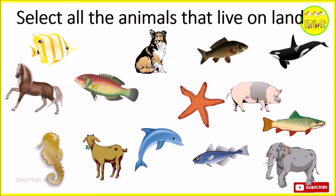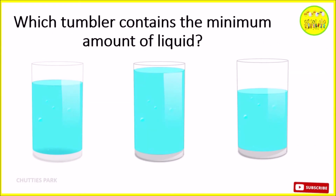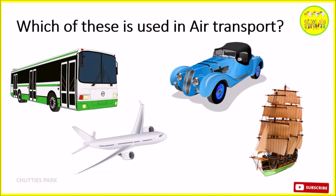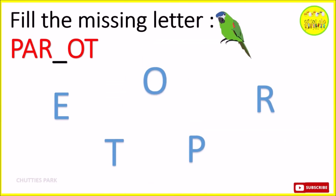Select all the animals that live on land. Which tumbler contains the minimum amount of liquid? Which of these is used in air transport? Fill in the missing letter.